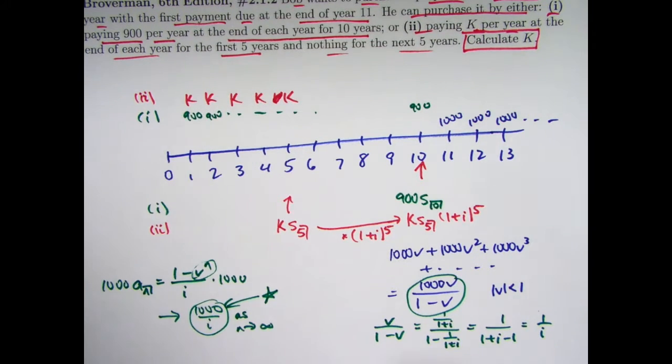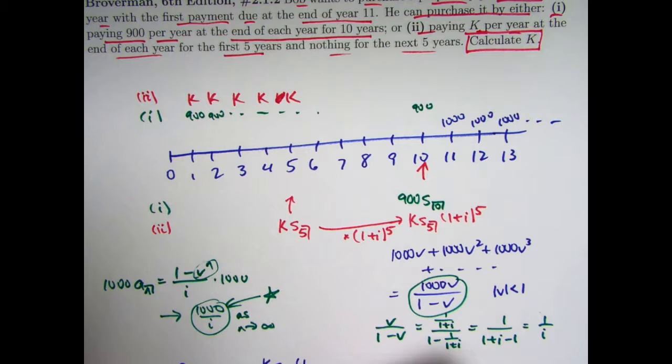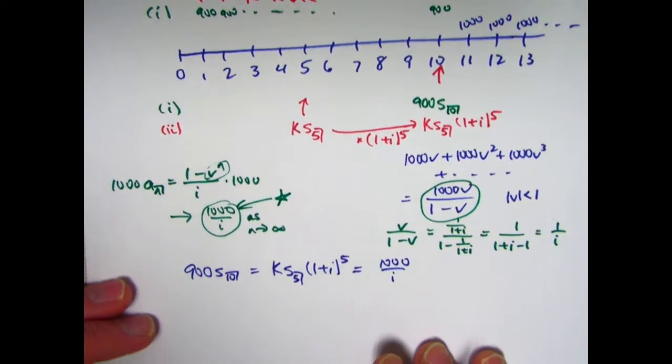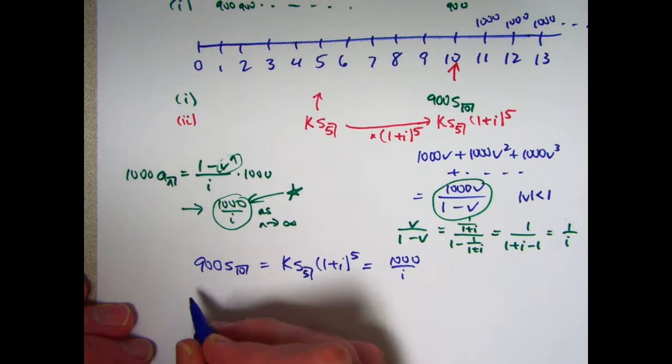All these things are equal to each other. So we get a series of equations. We get that 900 s10 equals k s5 times one plus i to the fifth equals 1000 over i. And we need to try to solve this for k.